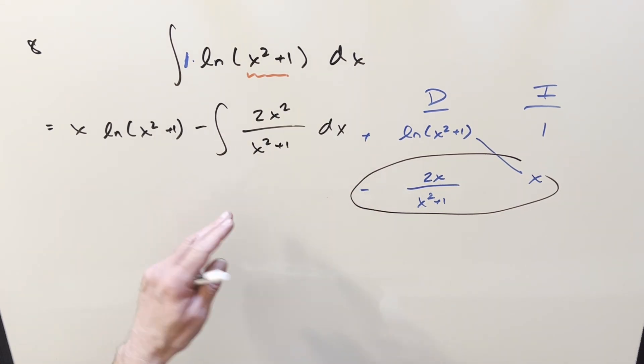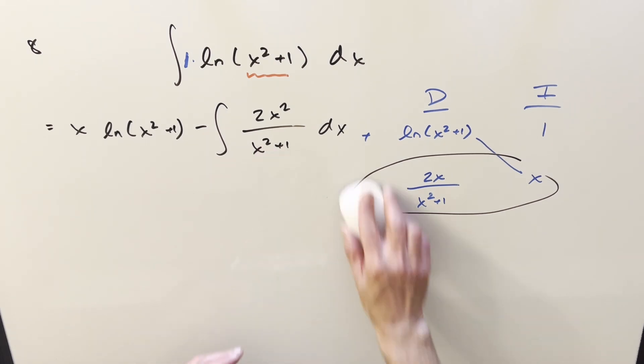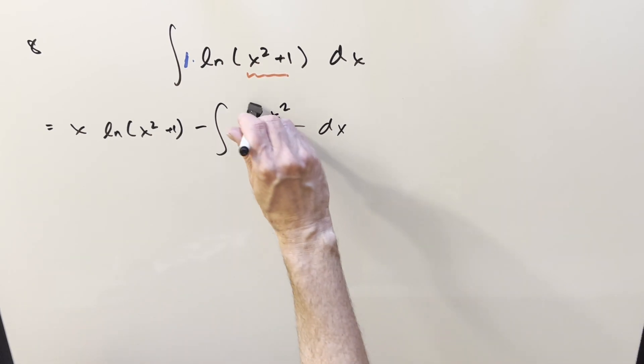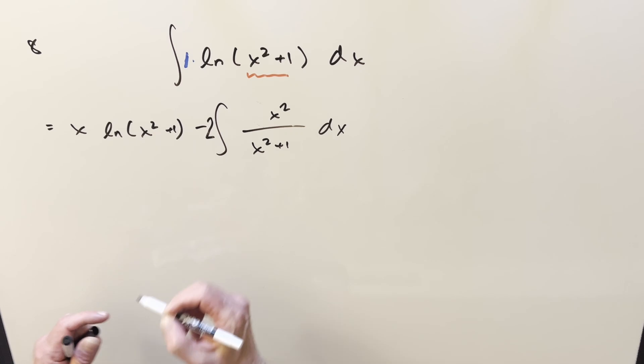But now this integral here, this is not going to be too bad. We can just probably manipulate this with some algebra. Let me get a little bit of space. First, let's take this 2 and bring it out front of the integral as a constant right here. We'll make it a skinny 2.